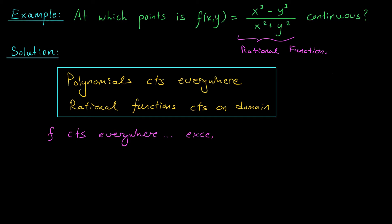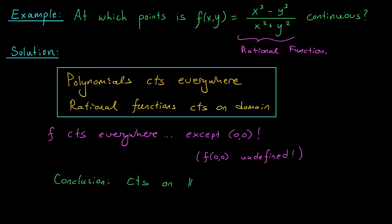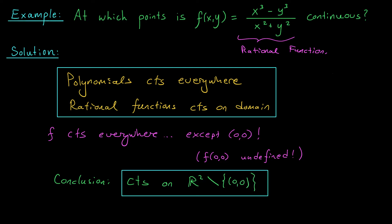No — the function isn't defined at (0, 0). So according to our definition, since (0, 0) is not a point in the domain, f(x, y) is discontinuous there. In conclusion, f(x, y) is continuous on R² minus the point (0, 0). This serves to emphasize a point: a function can't be continuous at a point that's not in its domain.